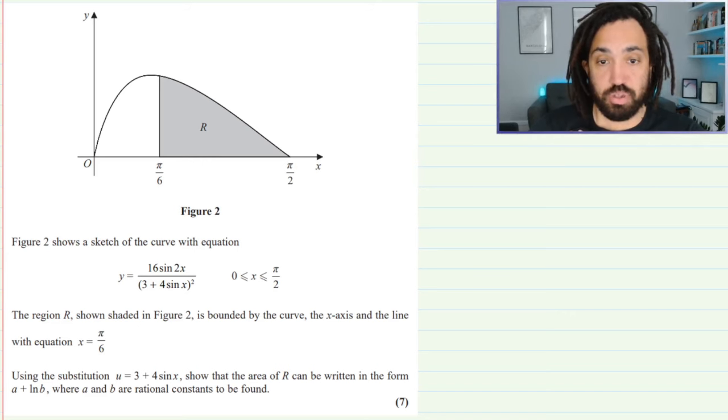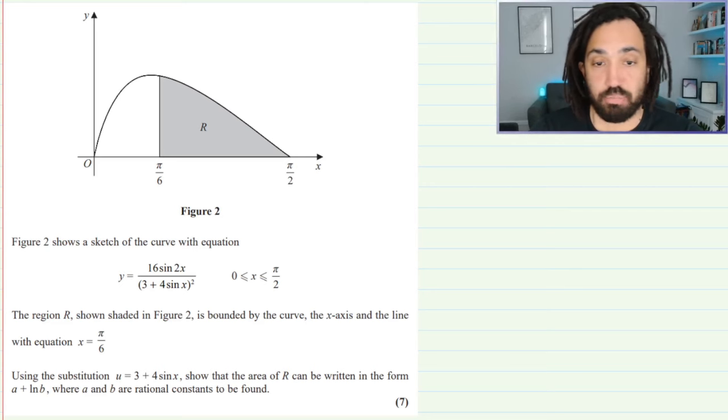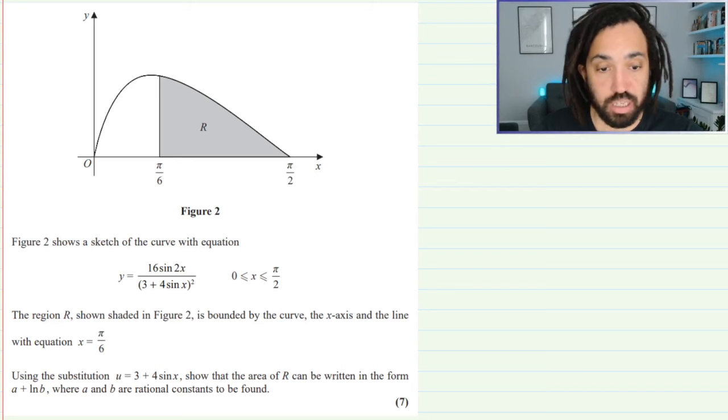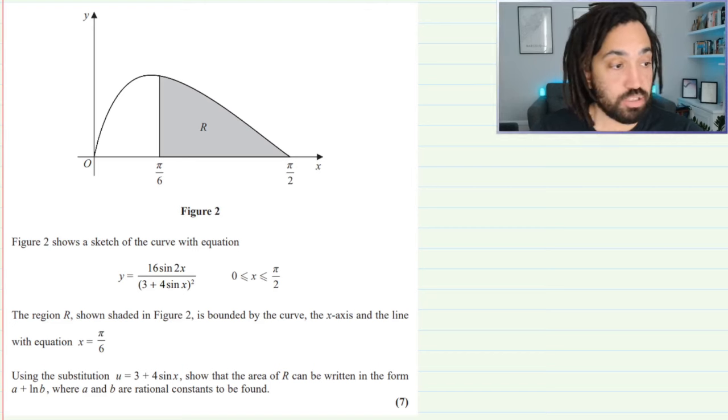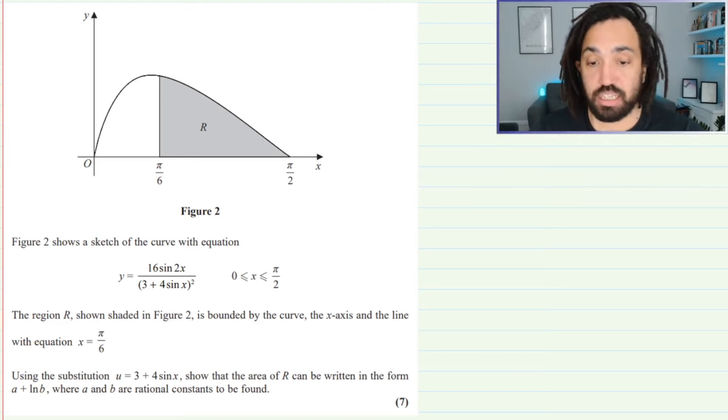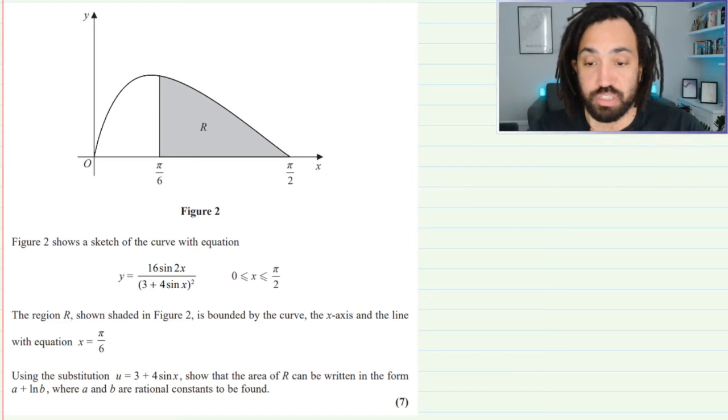This is a beautiful looking curve and it is a region which is in between pi over 6 and pi over 2. The figure shows the sketch of the curve with this equation and basically we just need to find the area. It says using a u substitution that is equal to 3 plus 4 sin x, show the area can be written in this particular form.